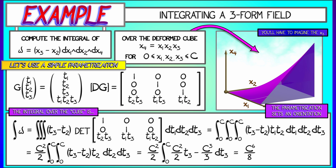Integrating with respect to t3 from 0 to c gives two terms: c⁶/8 and negative c⁶/6. This simplifies to a final answer of minus c⁶/12. That's not obvious — you can't just look at this and say clearly it's c⁶/12 with a minus sign. You really have to follow the mechanics of this problem: compute the derivative of the parametrization, plug it in, and integrate.